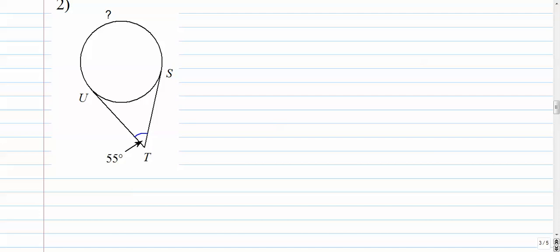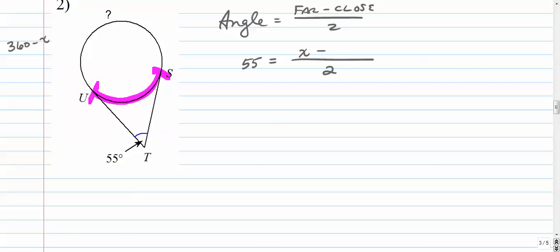Feel free to pause this one and give it a shot. We've got the angle equals the far away arc minus the close arc over 2. In this case, the angle is 55. The far away arc is what we're trying to find. The close arc is also not there. Well, that's interesting. No idea what this guy is. So what we need to do is use the same rule, 360 minus x. So if we set this equal to x, this is going to be 360 minus x.